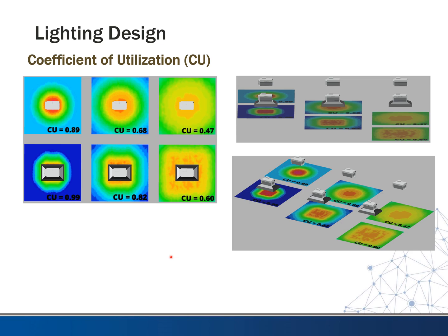This graph shows how the coefficient of utilization can be affected using the same light fixture in all six cases. On the bottom, fixtures have a reflector which helps distribute light toward the target; at the top, it's just the fixture without a reflector. As the target moves further from the fixture, the CU goes down. Reflectors are helping to direct light toward the target, giving a better CU — 0.99 in the best case, dropping all the way to 0.47 when furthest away with no reflector.